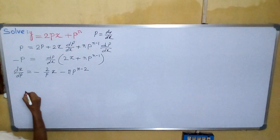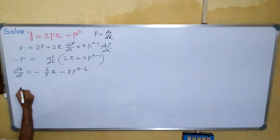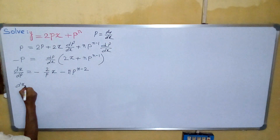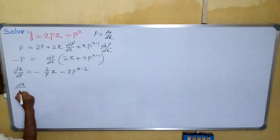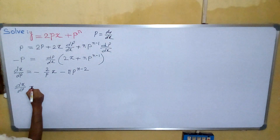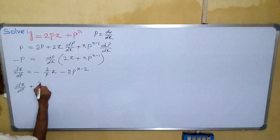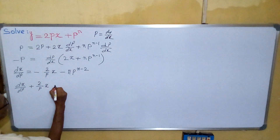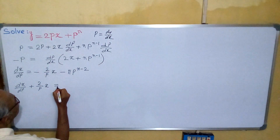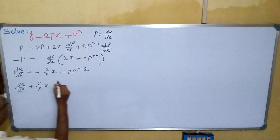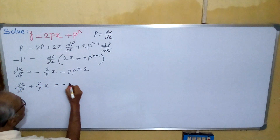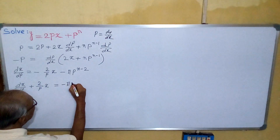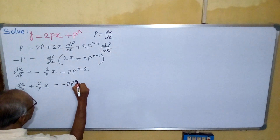Now we can write: dx/dp plus 2 divided by p times x equals minus n times p to the power n minus 2. This is now a linear first-order ODE in x as a function of p.